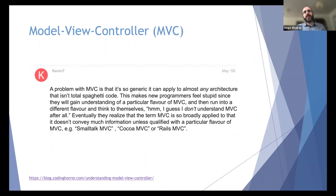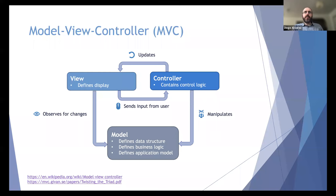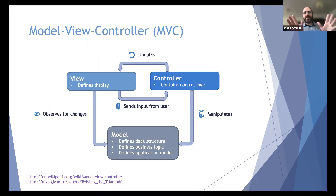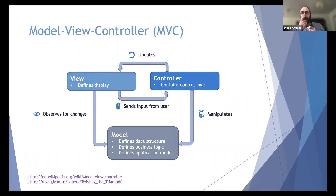MVC has several components. The view defines the display — and that's all it does. It's a passive structure, possibly written in a declarative language, specifying a button here, a table there, colors and layout. Whenever the user interacts with the view, the view sends that event to the controller. The controller runs the event loop and contains the control logic; based on input from the view, it may update the view or communicate with the model.